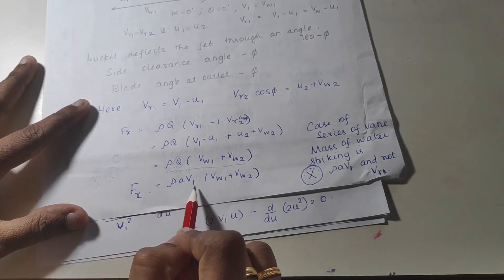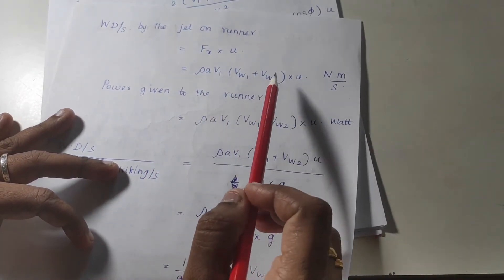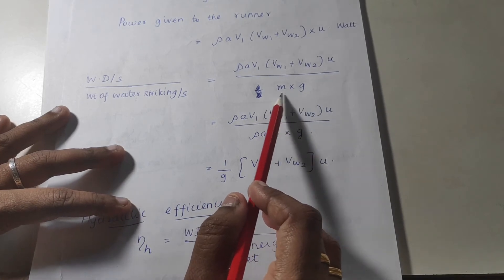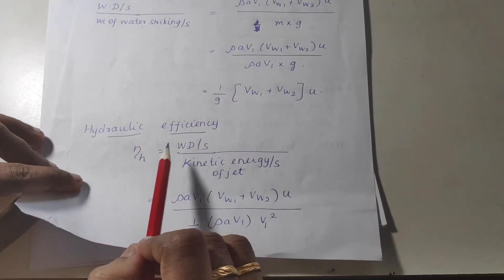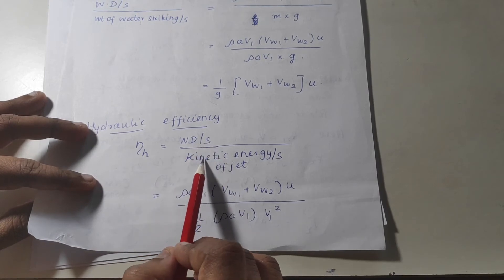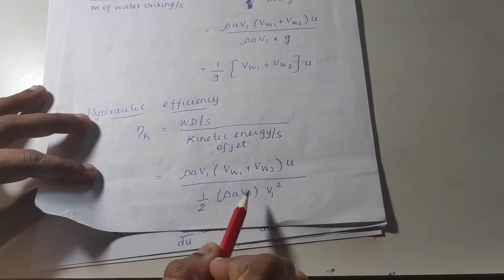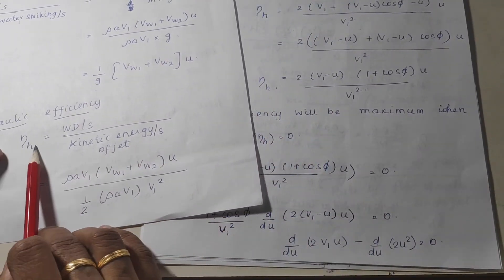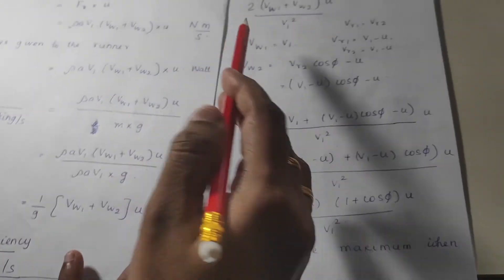Work done equals Fx multiplied by u. Power equals work done per second. The hydraulic efficiency is work done per second divided by the kinetic energy of the jet. The kinetic energy equals half·m·v1², where m equals ρ·A·v1. Substituting gives the hydraulic efficiency equation ηh.